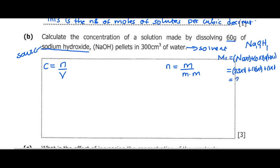23 plus 16 plus 1 gives us a total of 40. Therefore, the molar mass is equal to 40 grams per mole. When you add grams per mole to a relative formula mass, you get the molar mass.